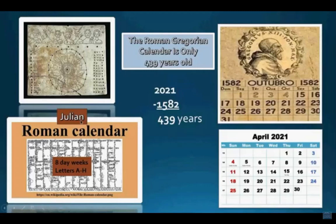The calendar began with the Julian calendar in 46 BC — an eight-day week calendar using letters A through H. That was the calendar around at the time of Yeshua. Then in 1582, Pope Gregory the 13th established the Gregorian calendar — still a Roman calendar. Constantine in the 300s moved Saturday toward the end of the week to give Jewish people a seventh-day Sabbath, but all the Sabbath and feast days were done away with. The Gregorian calendar is only 439 years old, and all the world has now accepted it.